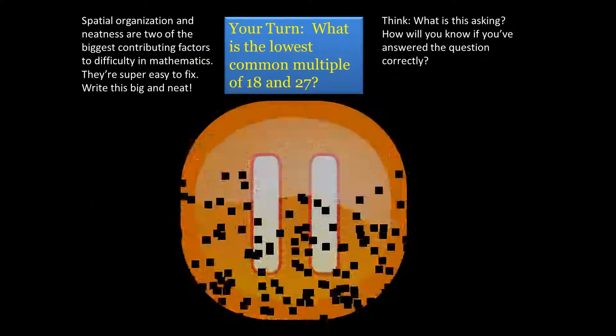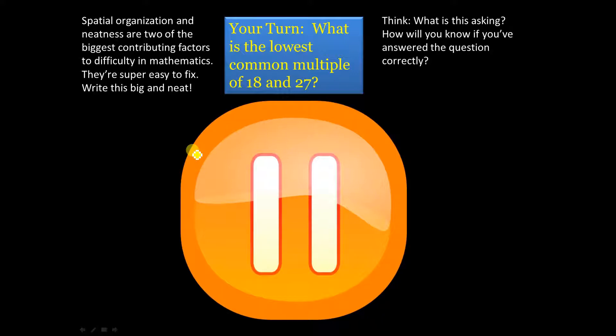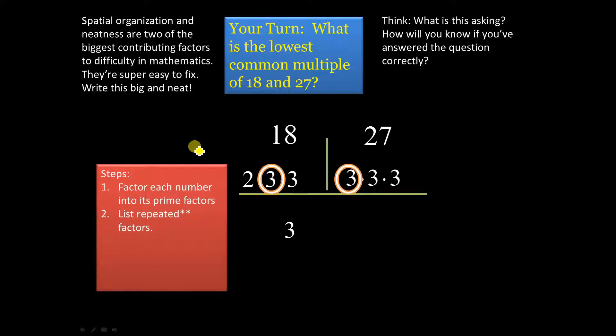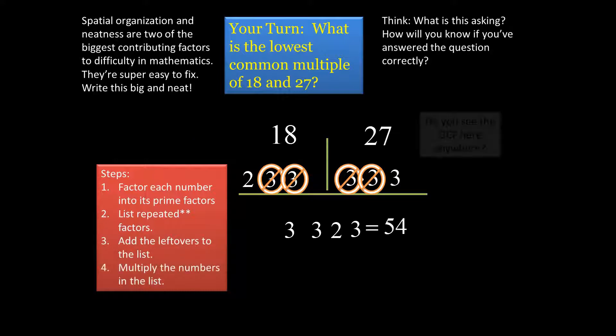Okay, now, your turn. You try. Go ahead and pause the video, give this one a shot. Then we'll go over it. Let's take a look. Just like before, make a list of the prime factors of each number, and then make another list where you write down what they have in common. And then whatever's left over, put it in the list, multiply it together. Boom, done.